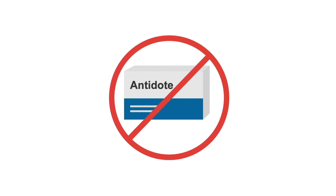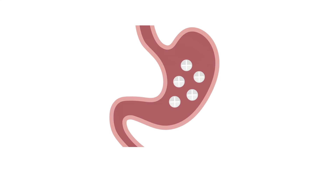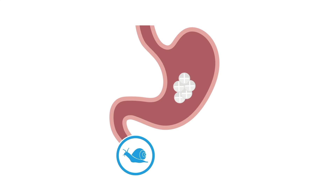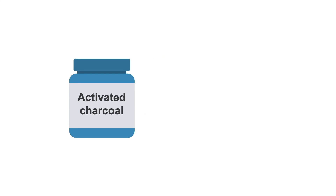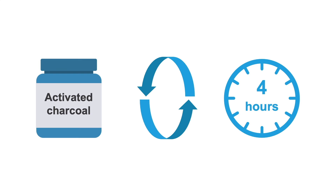There isn't a true antidote for salicylate toxicity, which is why our ABCs are so important. But activated charcoal is highly effective in these patients. Salicylates can actually delay stomach emptying, giving the drug more time to be absorbed. And with a large overdose, the pills may stick to each other, further delaying absorption. Some experts say that you can give activated charcoal two hours or even longer after an acute salicylate overdose, and you can also repeat the dose every four hours.